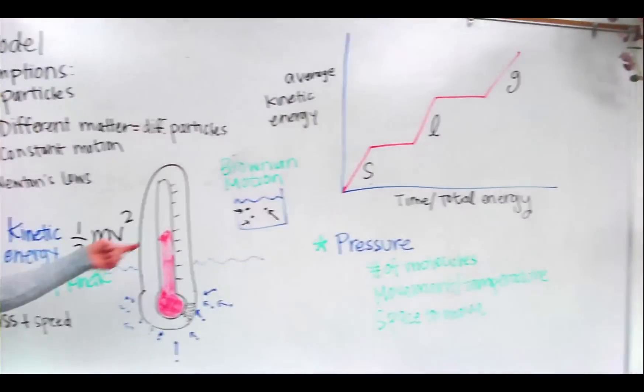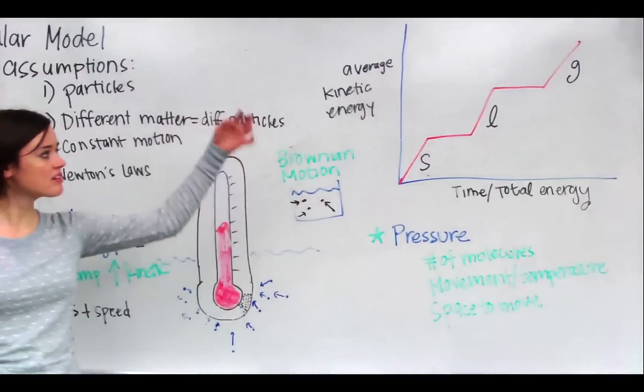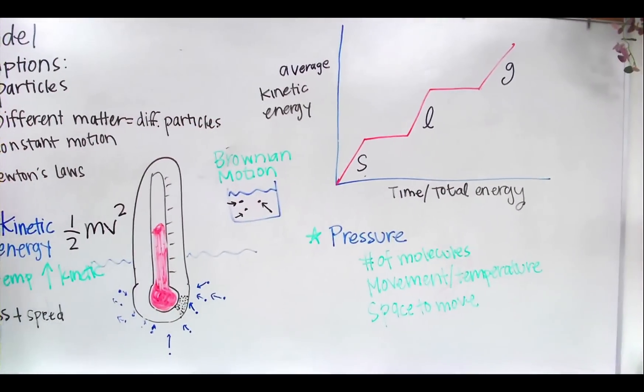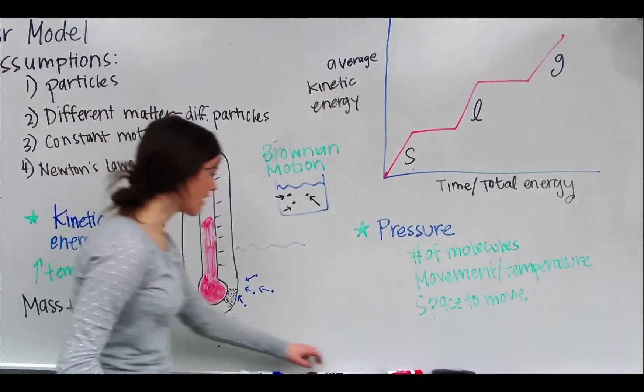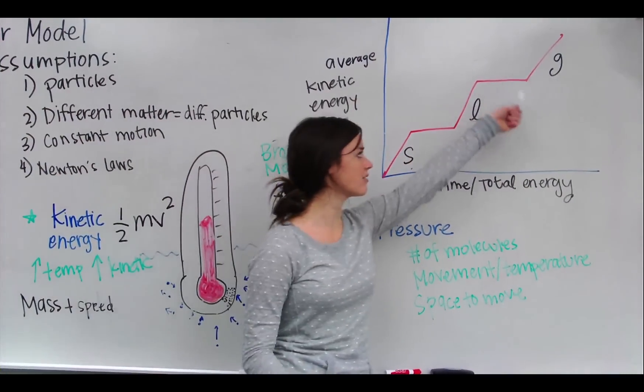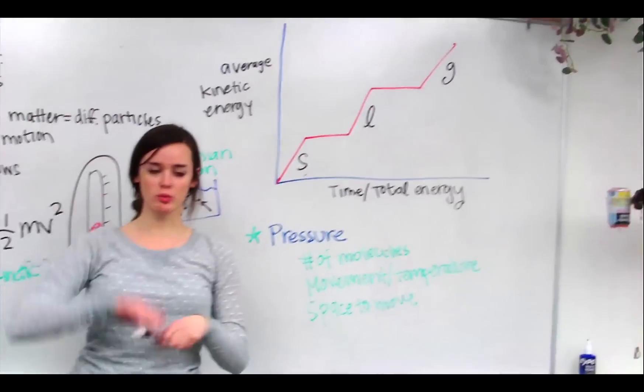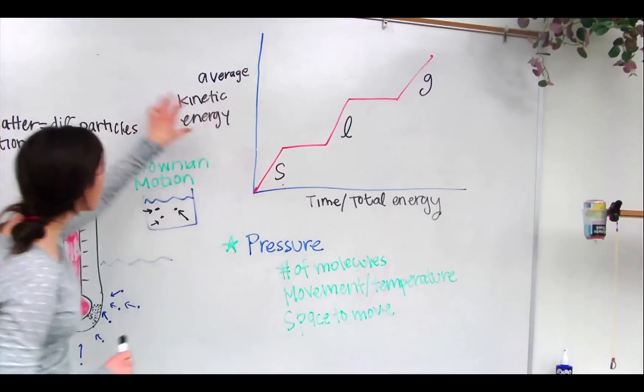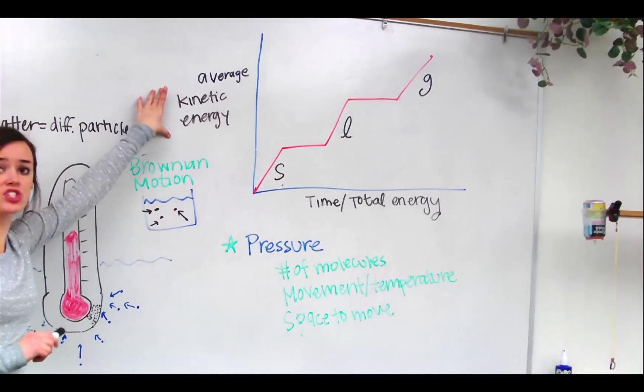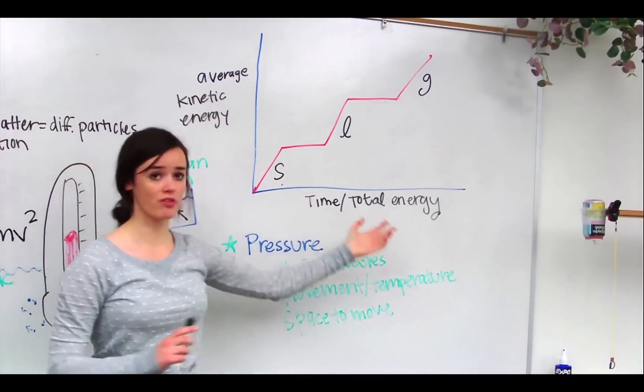So as we talked about last chapter, there's solids, liquids, and gases, and we get phase changes between those. This graph over here helps to illustrate kind of the way the temperature works with the phase change. So on the left, we have average kinetic energy, which is the temperature. And then just over time, our energy.